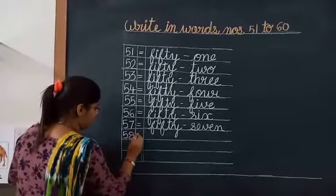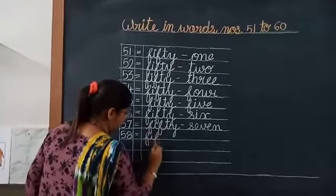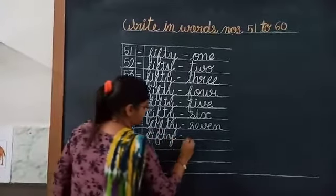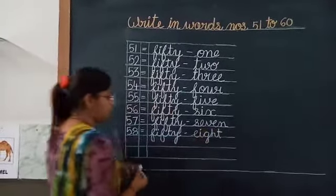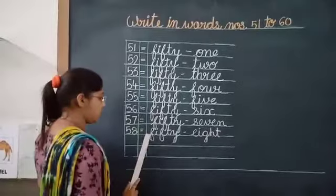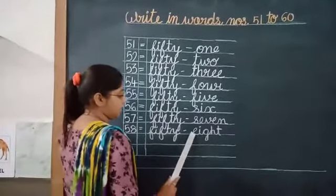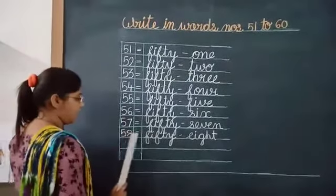Next, 58. F-I-F-T-Y, 50. E-I-G-H-T, 8. 58. F-I-F-T-Y, 50, E-I-G-H-T, 8. 58.